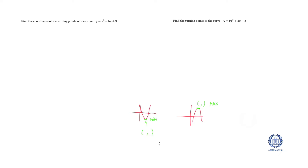What we're going to do is find the coordinates of these points using completing the square. So if we look at the first one, we have y equals x squared minus 5x plus 9, and we want to find a turning point for this. Now remember, we are not solving for x — we're not finding x equals something. We're finding the coordinates. So we're going to keep y the same and complete the square for this. So x squared becomes x, I'm going to half 5 which is 5 over 2, whole thing squared, carry the plus 9, and then minus 25 over 4. If you don't know how to do this, watch the previous video — I'll explain everything there.